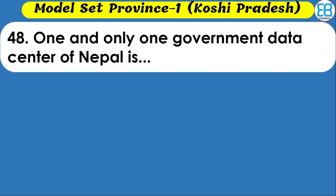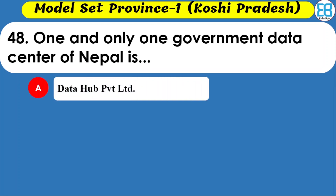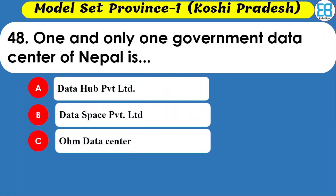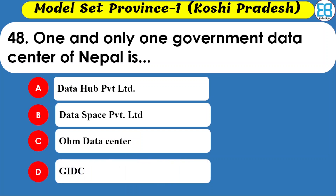The one and only government data center of Nepal is called what? Options are Data Private Limited, Data Space Private Limited, and Home Data Center. The correct option is GIDC — Government Integrated Data Center.